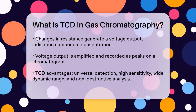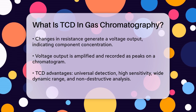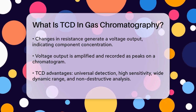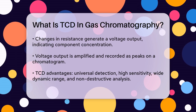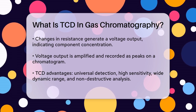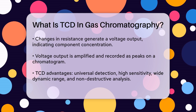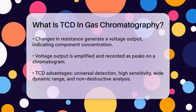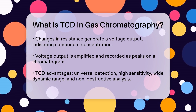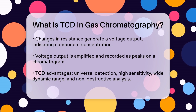The TCD has several advantages. It's a universal detector, meaning it can detect all components, and it's highly sensitive with a wide dynamic range. This makes it great for analyzing both very small amounts and high concentrations of components. Plus, it's non-destructive, so the sample can be recovered after analysis for further testing.